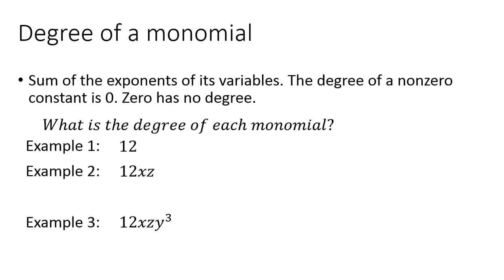Next we are going to be looking at how to find the degree of a monomial. To do that, it's the sum of the exponents of its variables. The degree of a nonzero constant is 0, and 0 has no degree. We're going to be finding the degree of each of the monomials in examples 1, 2, and 3.